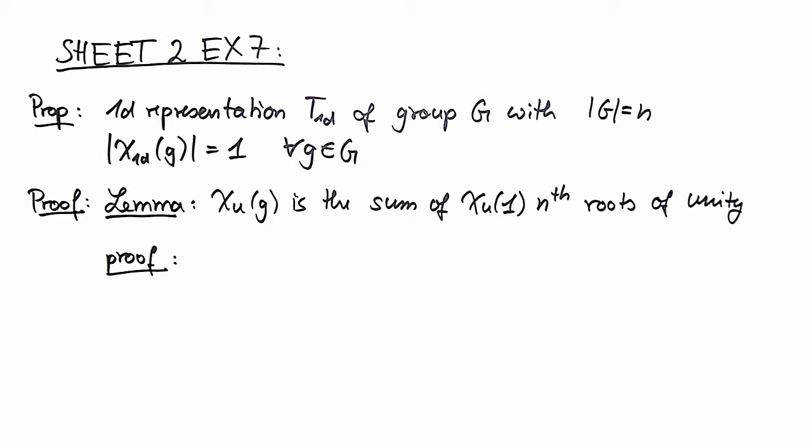Therefore we prove a little lemma which is a little more general. Namely for a general representation u, the character is the sum of the character of the identity element and roots of unity. So this is a number here.